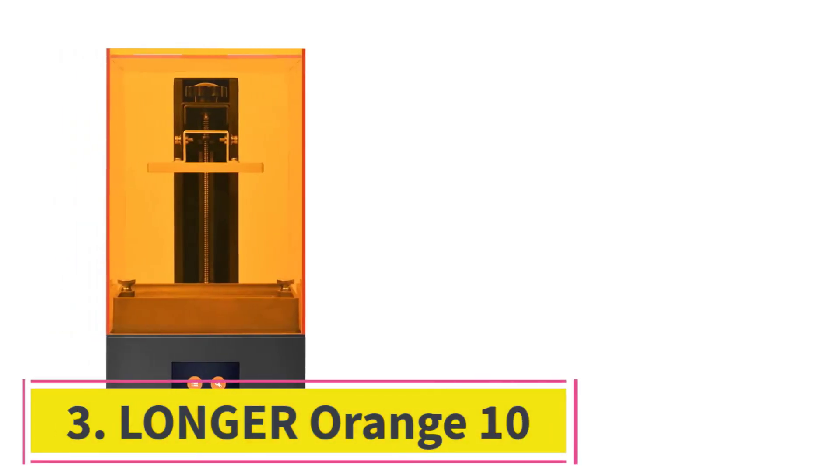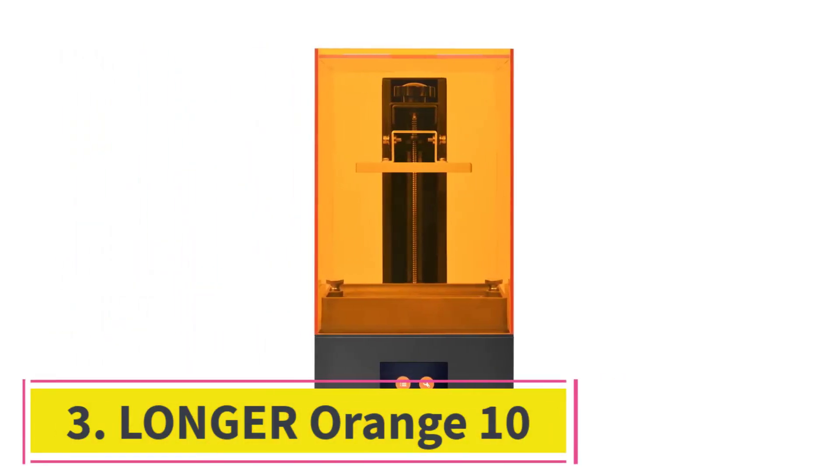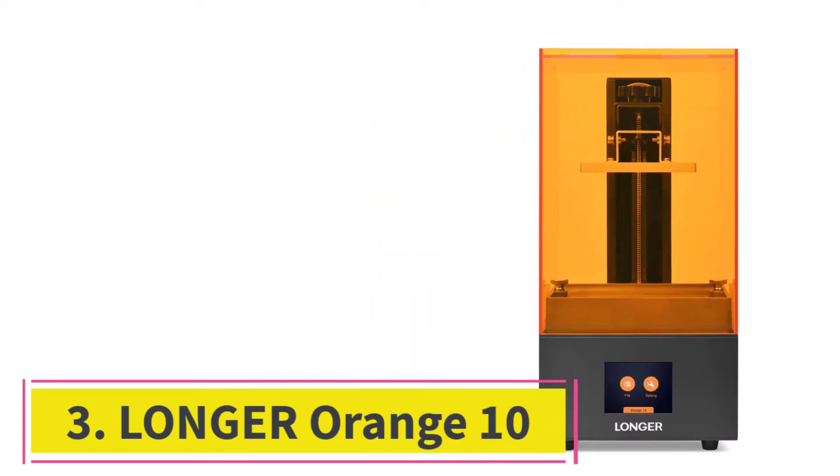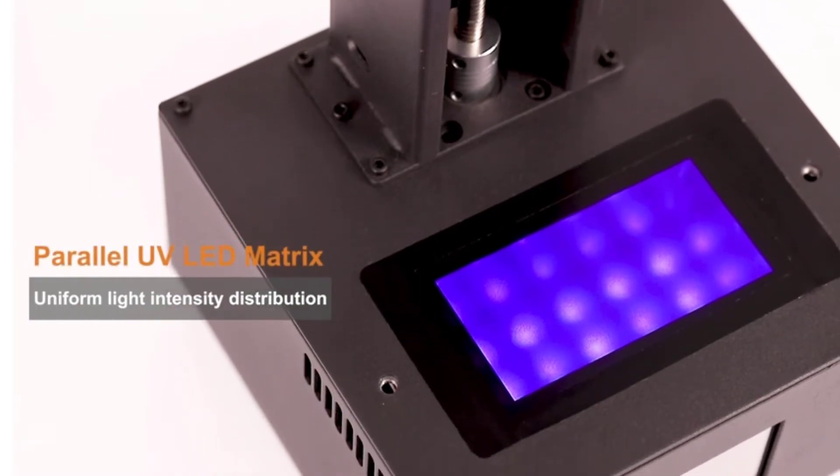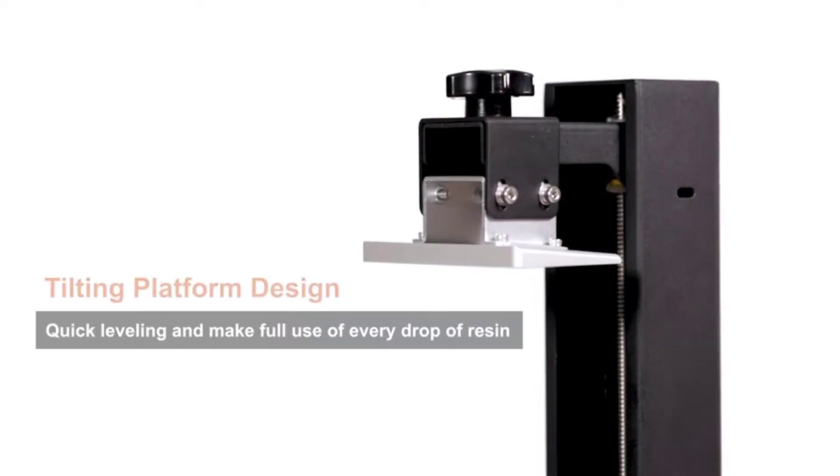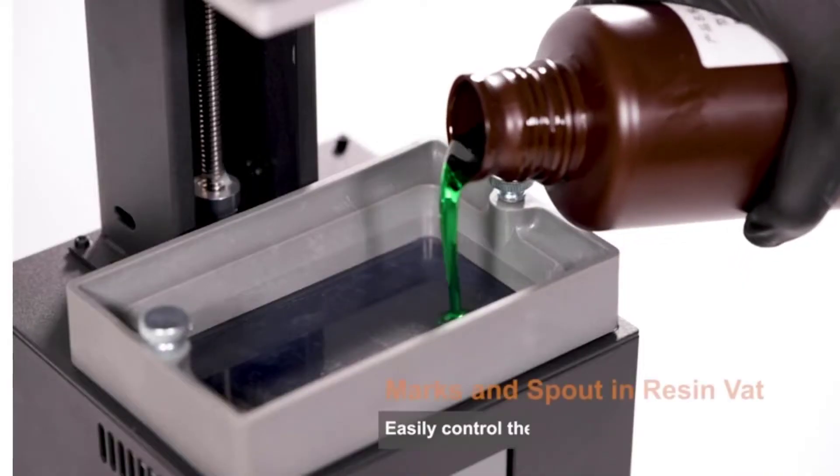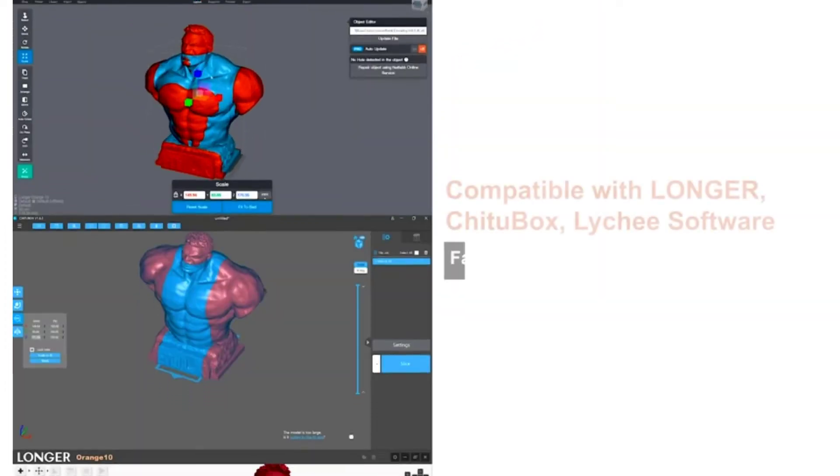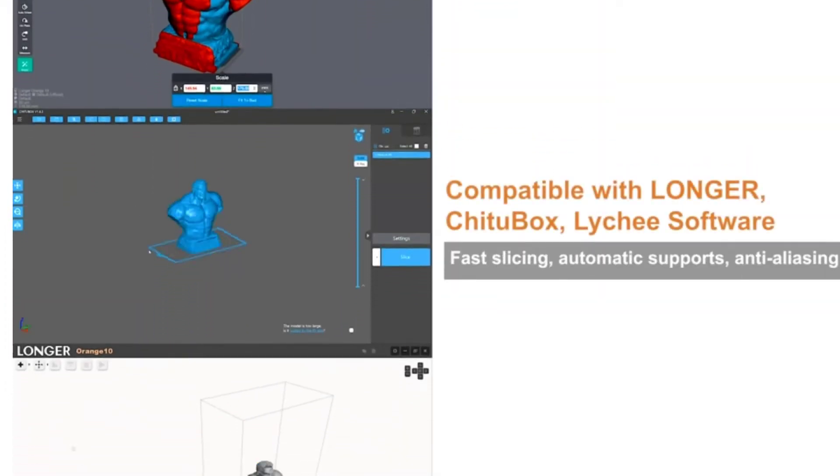At number 3, Longer Orange 10. Longer Orange 10 is an excellent entry-level UV-light-curing 3D printer with an LCD screen. Being user-friendly and easy to configure, this 3D printer for D&D miniatures ensures fast prototyping with highly accurate details.